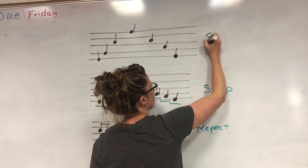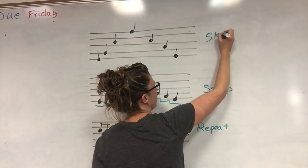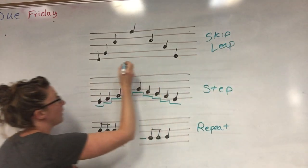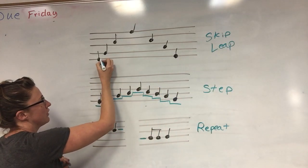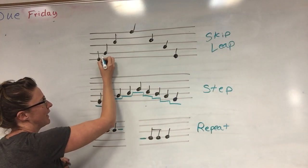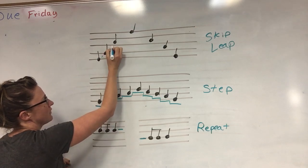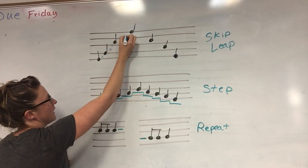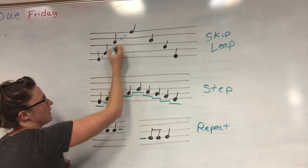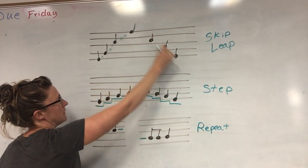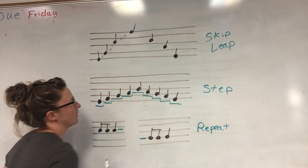The third and final way notes can move is when they skip or leap over something. Even though it's going from line to line, they're leaping over the space, or skipping over the space and line. It can go up or it can go down, but it's moving by skip or leap.